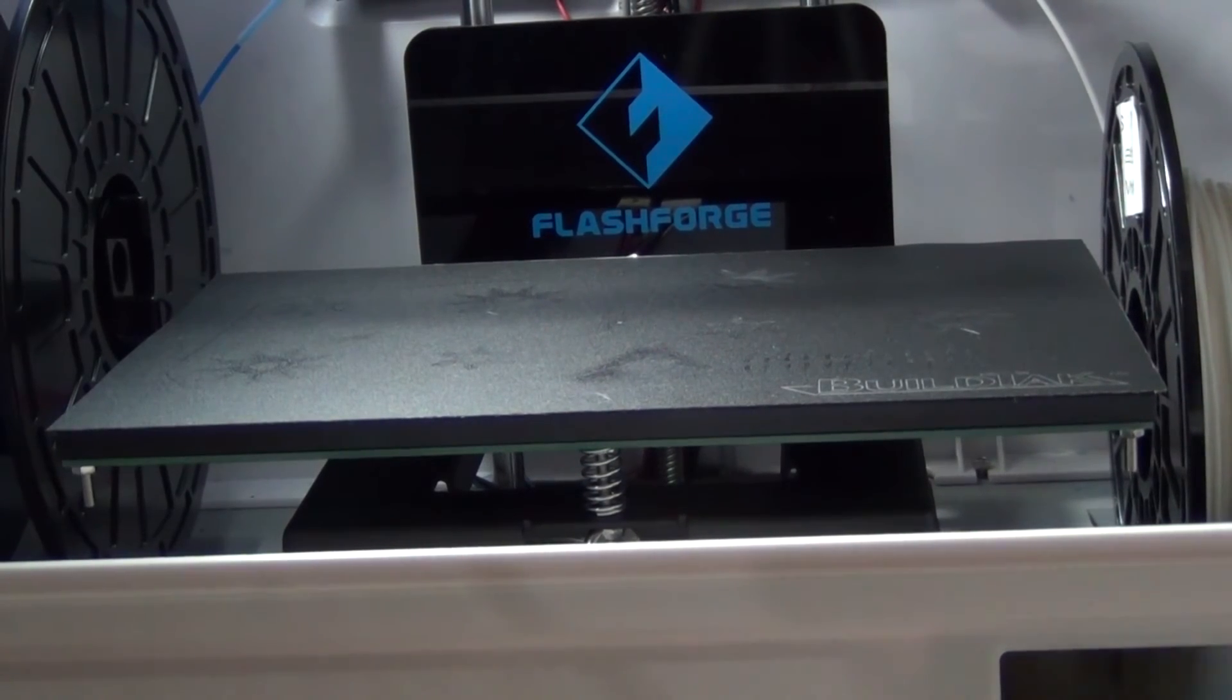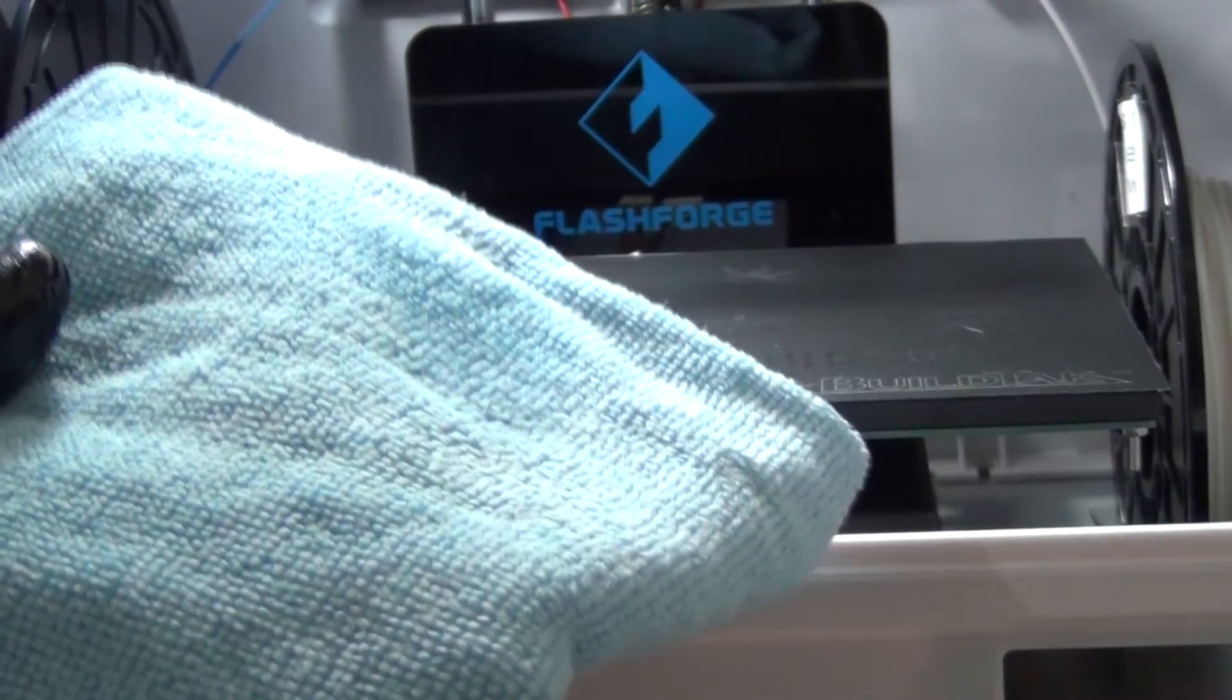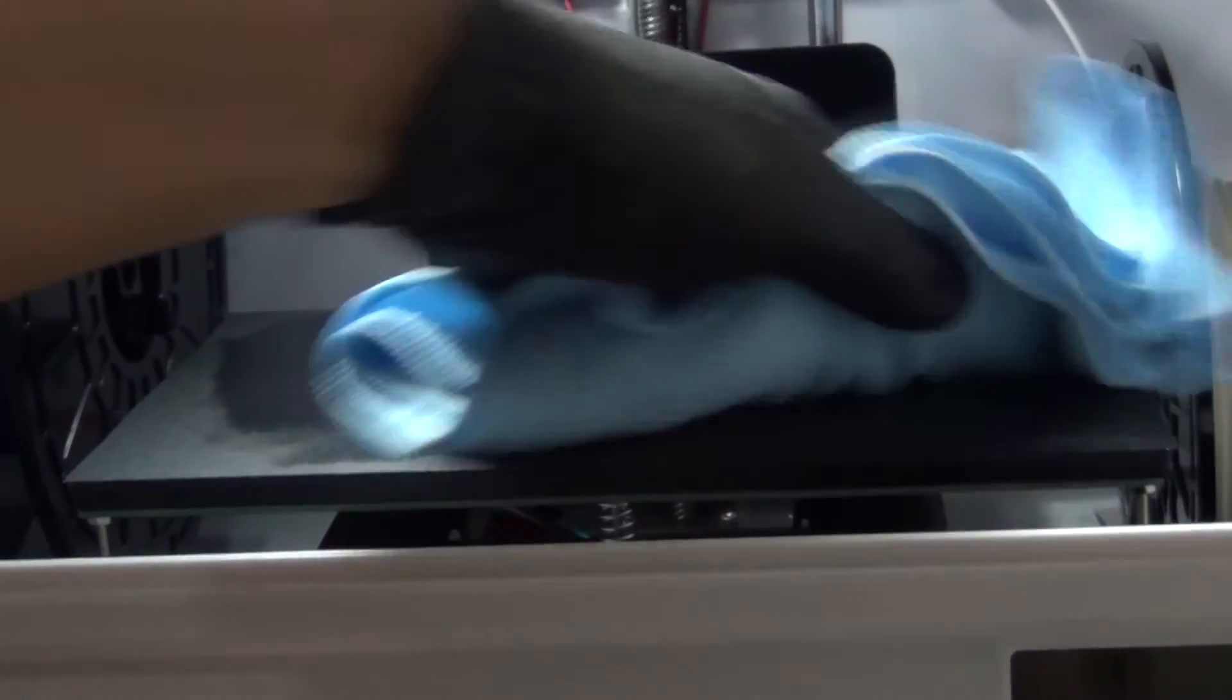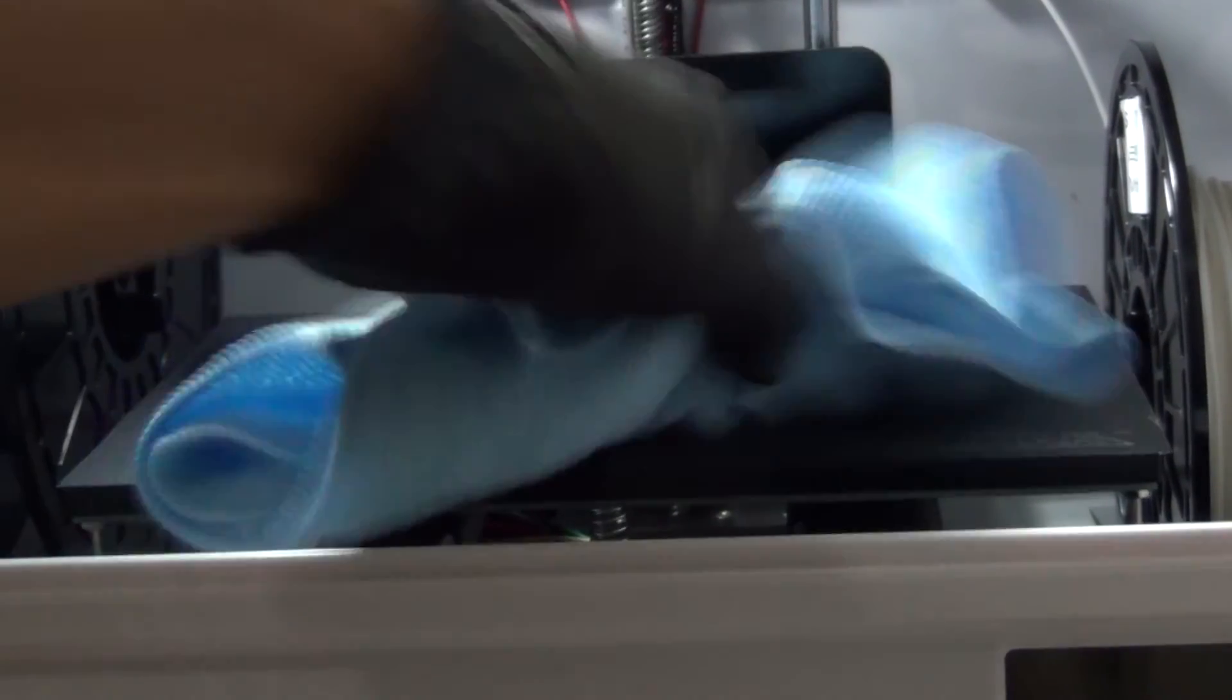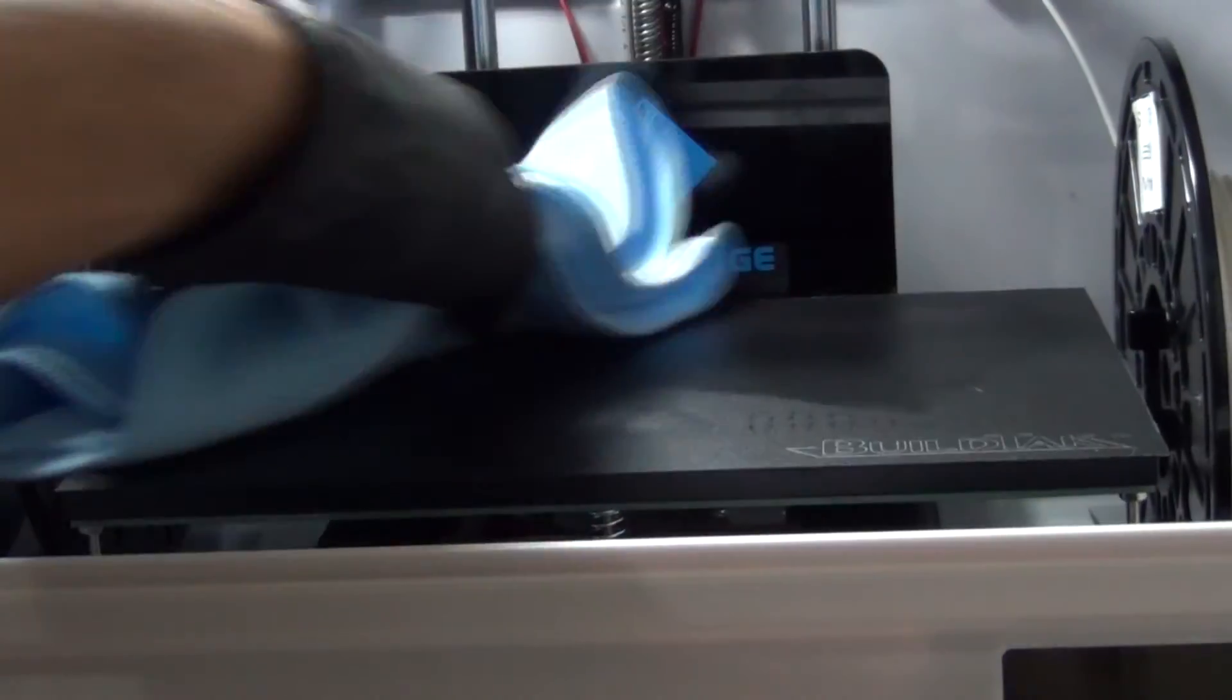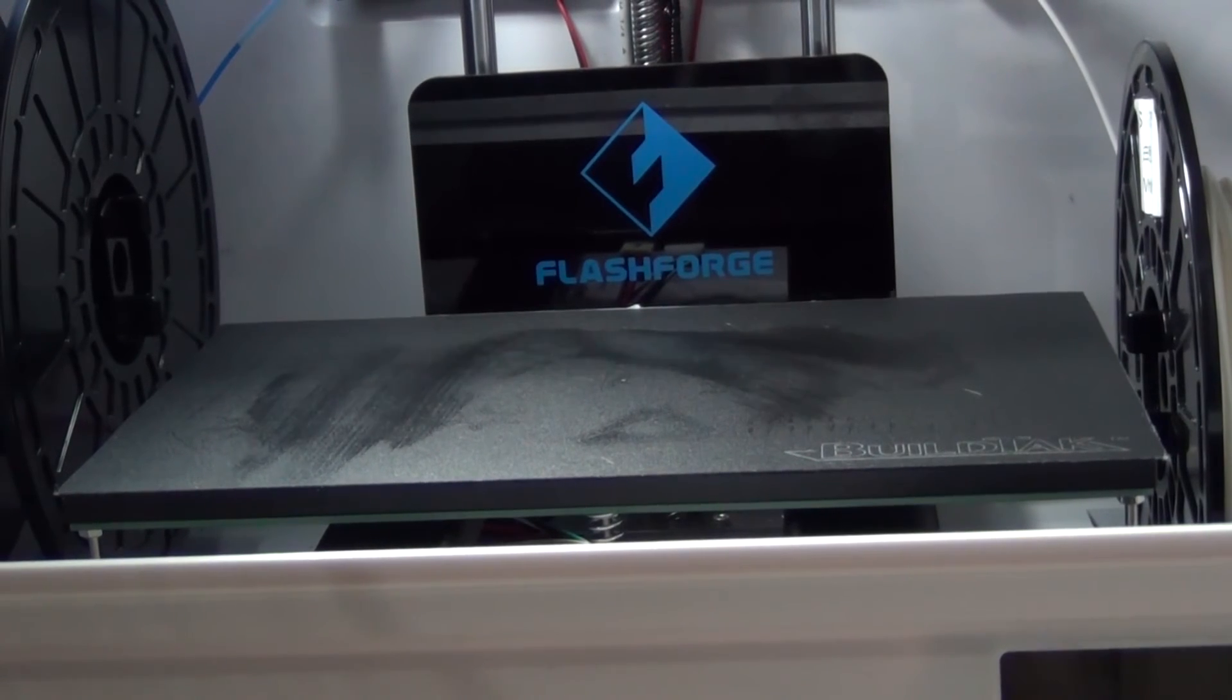After printing your parts, what you want to do is you just want to get some isopropyl alcohol again, and you just want to spray some just onto the sheet and then just rub the surface so that it's free from any contaminants and any sort of old parts that you may have had left stuck on the print bed. But after that you should be all done.